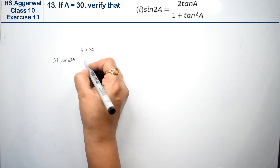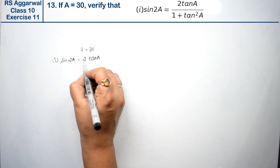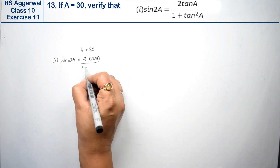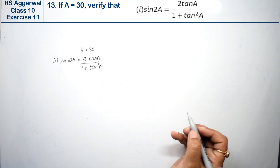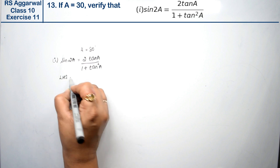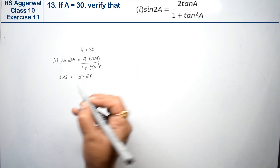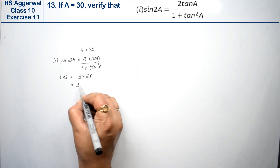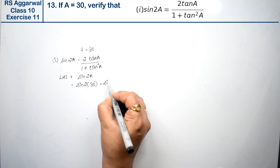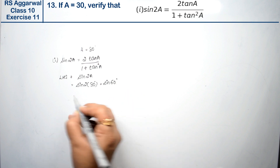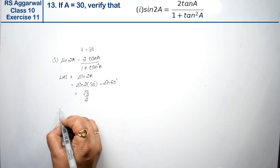First part says verify that sin 2A equals 2 tanA upon 1 plus tan²A. So we will first take the left hand side, then the right hand side. For LHS: sin 2A, with A = 30°, becomes sin(2 × 30°) = sin 60°. And sin 60° equals √3/2.